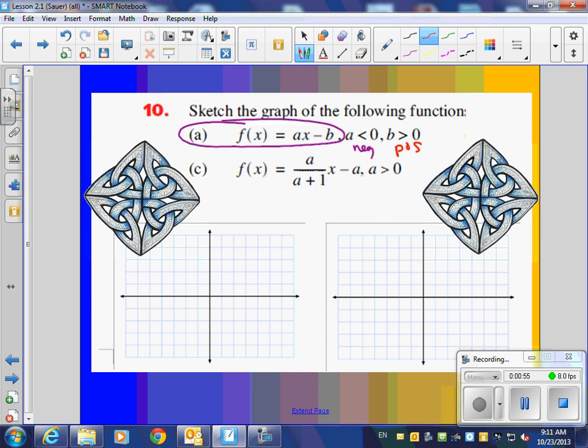So essentially, this f of x is like a negative A, x minus B. So what's the slope of the line? Going to be positive or negative? Negative. So it's going to be zipping down this way.